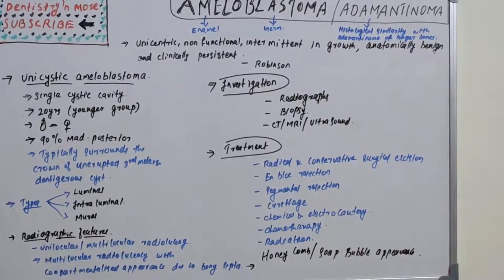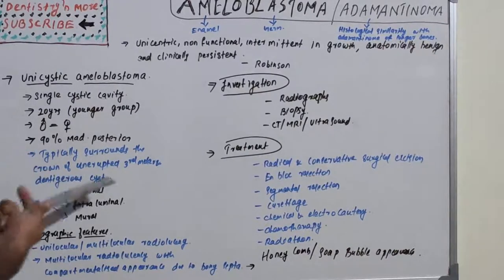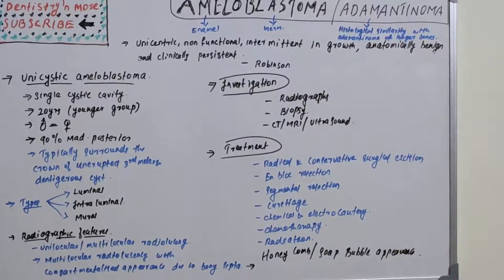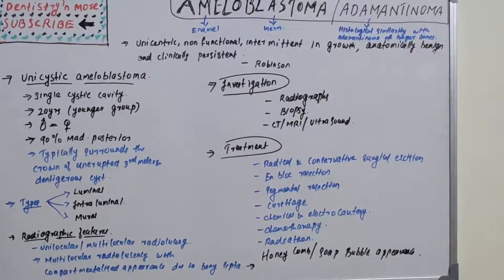Investigations include radiographs, biopsy, CT, MRI, or ultrasound. Other variants include: peripheral ameloblastoma — rare, develops in soft tissues of gingiva and mucosa, non-invasive; pituitary ameloblastoma — also known as Rathke's pouch tumor, involving neoplasm of the CNS; and malignant ameloblastoma — a very rare malignant transformation of normal ameloblastoma.